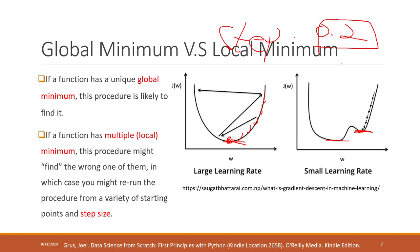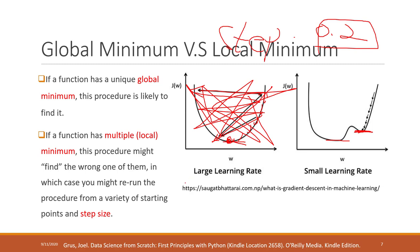If each step is very big — say we choose a step here and use the same large step — we will go too far and just randomly bounce within the function. We can never reach the global minimum. So if the step size is too big, we will never reach the minimum.